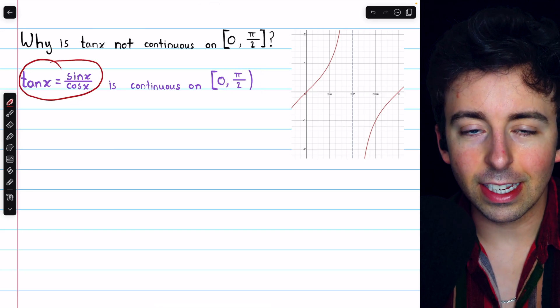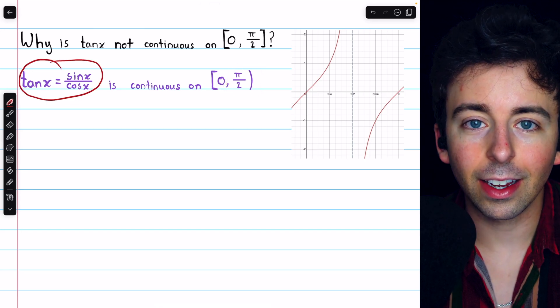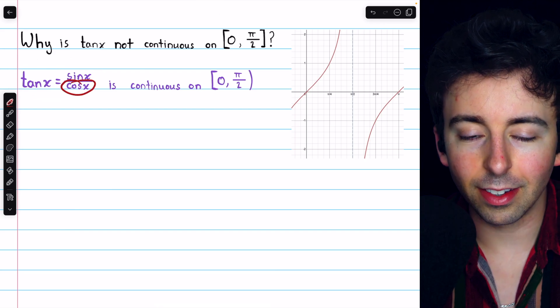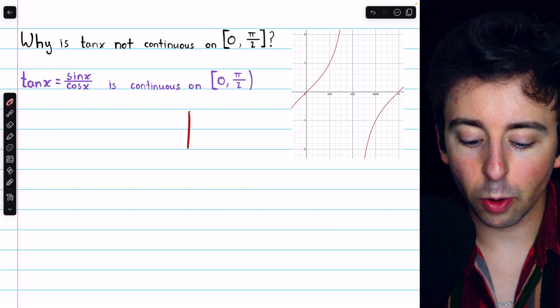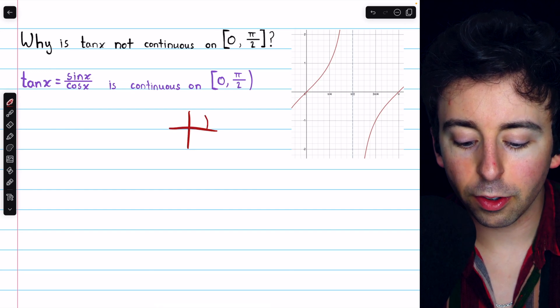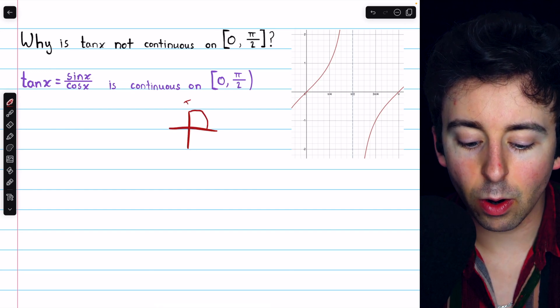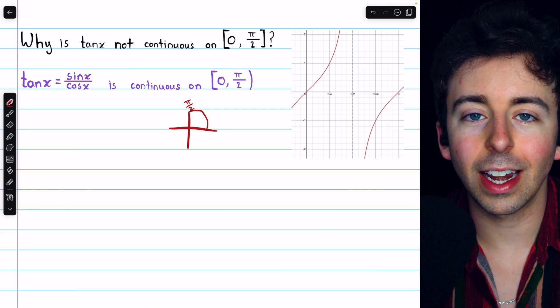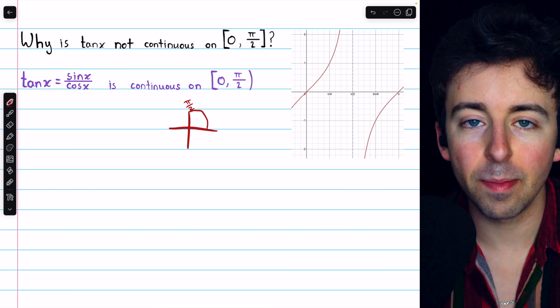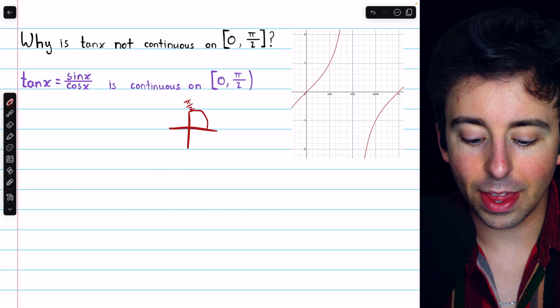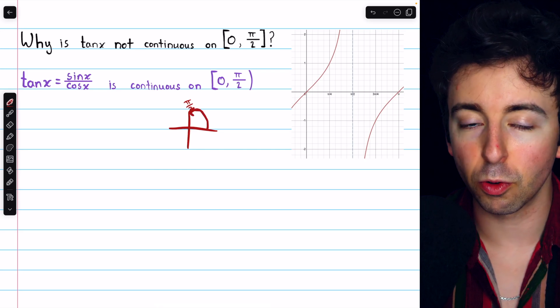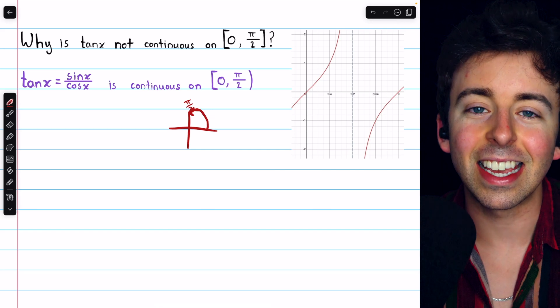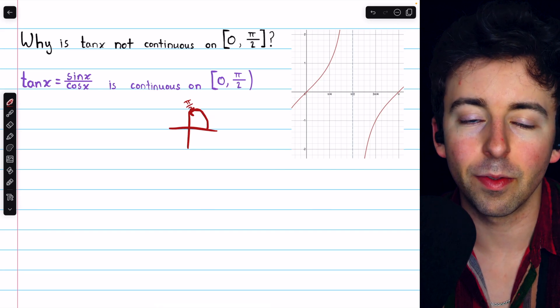Certainly, since tan x equals sine x over cosine x, any place where cosine x is 0 is going to cause an issue. And if you remember your unit circle, it is precisely at pi over 2 where cosine x is 0 for the first time, as far as the positive angles are concerned. That's where we first arrive at a cosine value of 0, which on the unit circle, that's the x-coordinate. That's the cosine value.